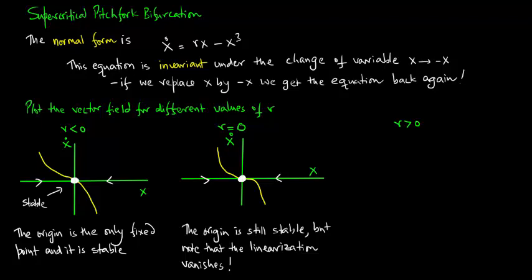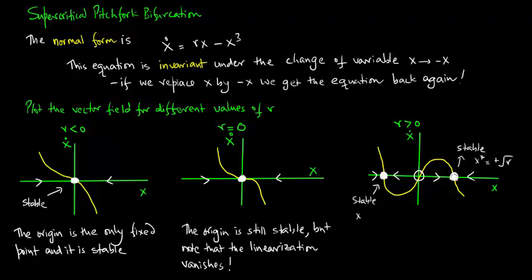The origin is still stable but note that the linearization actually vanishes. Now consider r greater than zero. Here is where we get some interesting dynamics. We get two stable fixed points and an unstable fixed point. So we have stable at x star equals plus the square root of r, and stable at x star equals minus the square root of r, and the origin is unstable.